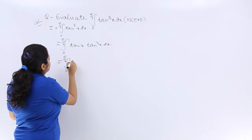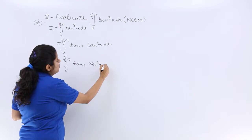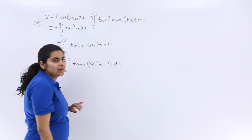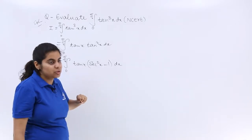So I write ∫₀^(π/4) tanx(sec²x - 1) dx, and that whole thing will come in the bracket. Why I have done this is important, because sec²x - tan²x = 1.